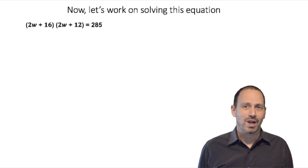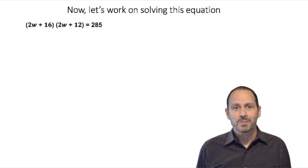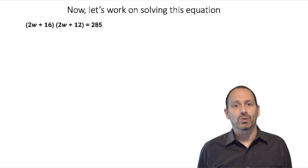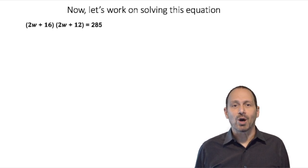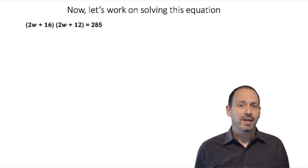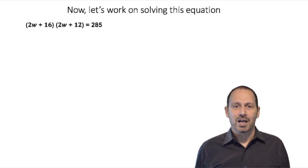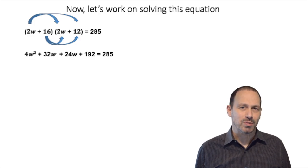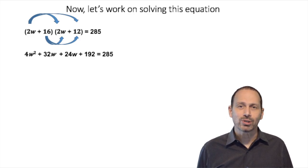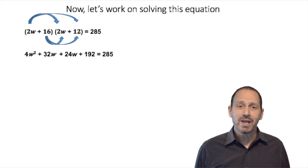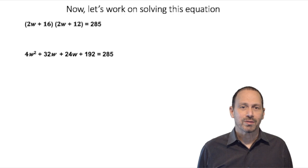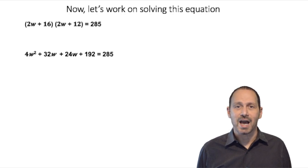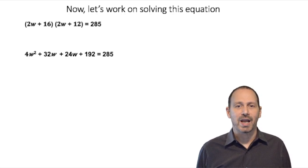Now let's move forward and solve this equation. We begin with the length multiplied by the width equal to the area. That is 2W plus 16 multiplied by 2W plus 12 equal to 285. Now when we multiply all the terms of the first binomial by all the terms of the second binomial, we get 4W squared plus 32W plus 24W plus 192 equal to 285.